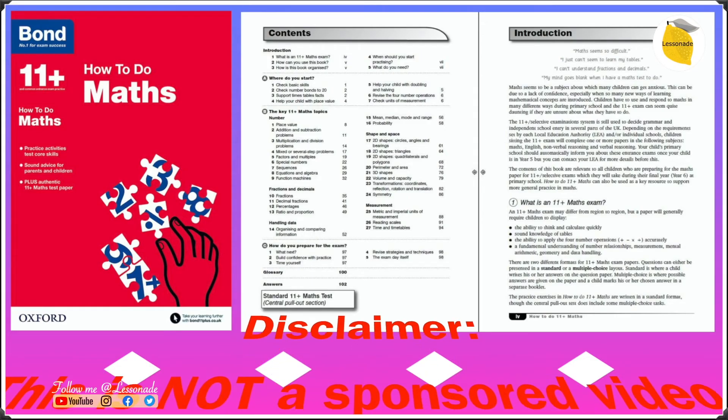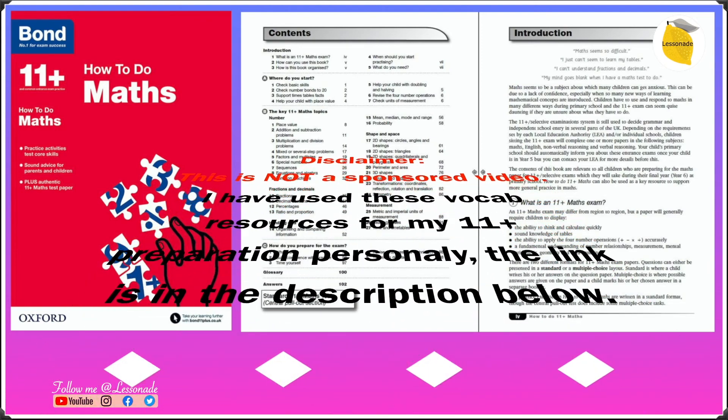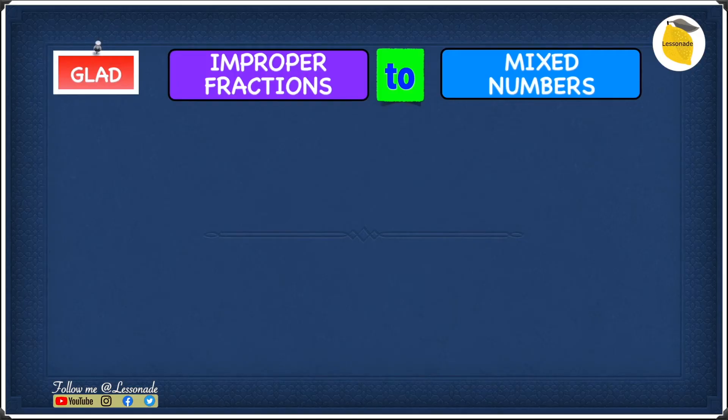If you guys want to know more on fractions, I've got a link in the description below and in the comments section below. So go check that out. Now let's see how to convert improper fractions into mixed numbers using GLAD for this example. And the example we have is 29 over 3.